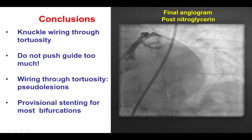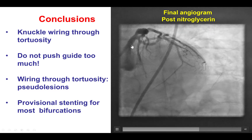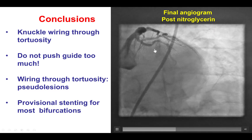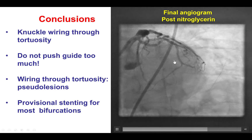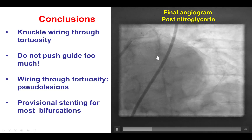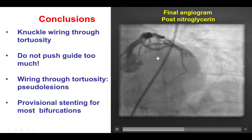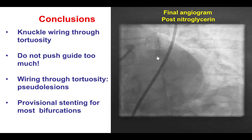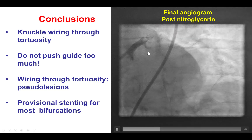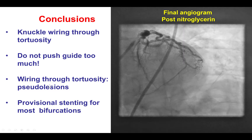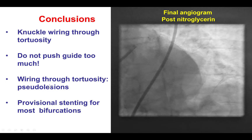The possibility of pseudo-lesion formation when a guide wire is advanced through highly tortuous vessels — these may create additional lesions that are not true lesions, but are just the result of the guide wire straightening that vessel.